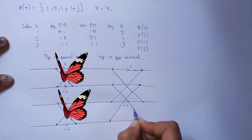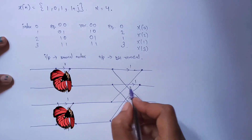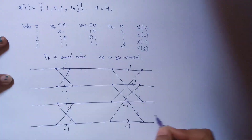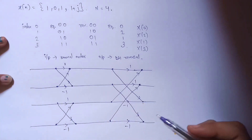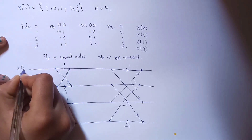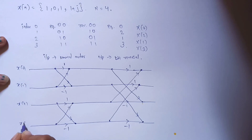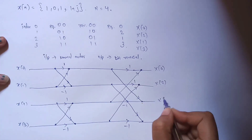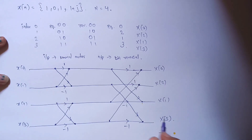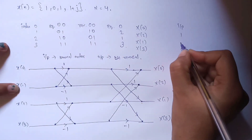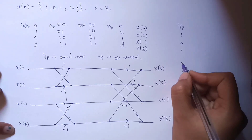As we go to the right, the butterflies overlap. The head has coefficient 1 and the bottom has minus 1, with data flowing accordingly. The input is in time domain in normal order: x(0), x(1), x(2), and x(3). The output is in frequency domain in bit reversal order: X(0), X(2), X(1), and X(3). The inputs are x(0)=1, x(1)=0, x(2)=1, and x(3)=1+j.